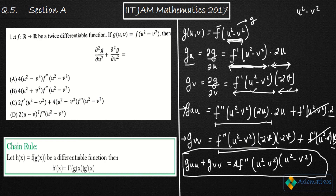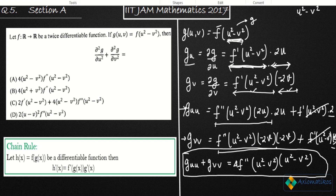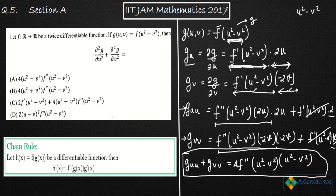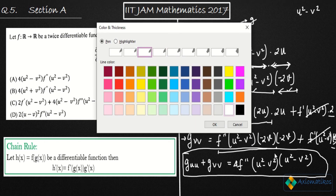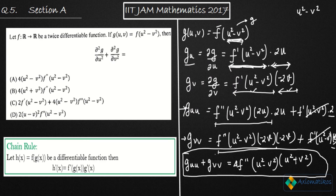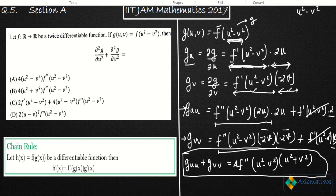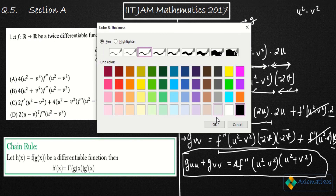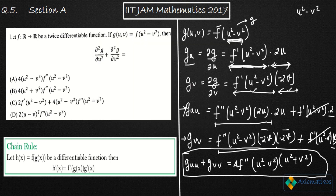Now let us identify the correct option. Option A says 4(u² - v²)·f''(u² - v²) — that is wrong. Option B says 4(u² + v²)·f''(u² - v²) — that is correct. Options C and D are also incorrect. Note: the minus signs from differentiating -2v combine to give a plus, so the answer is 4(u² + v²)·f''(u² - v²). This is a very easy question totally dependent on the chain rule. Thank you.